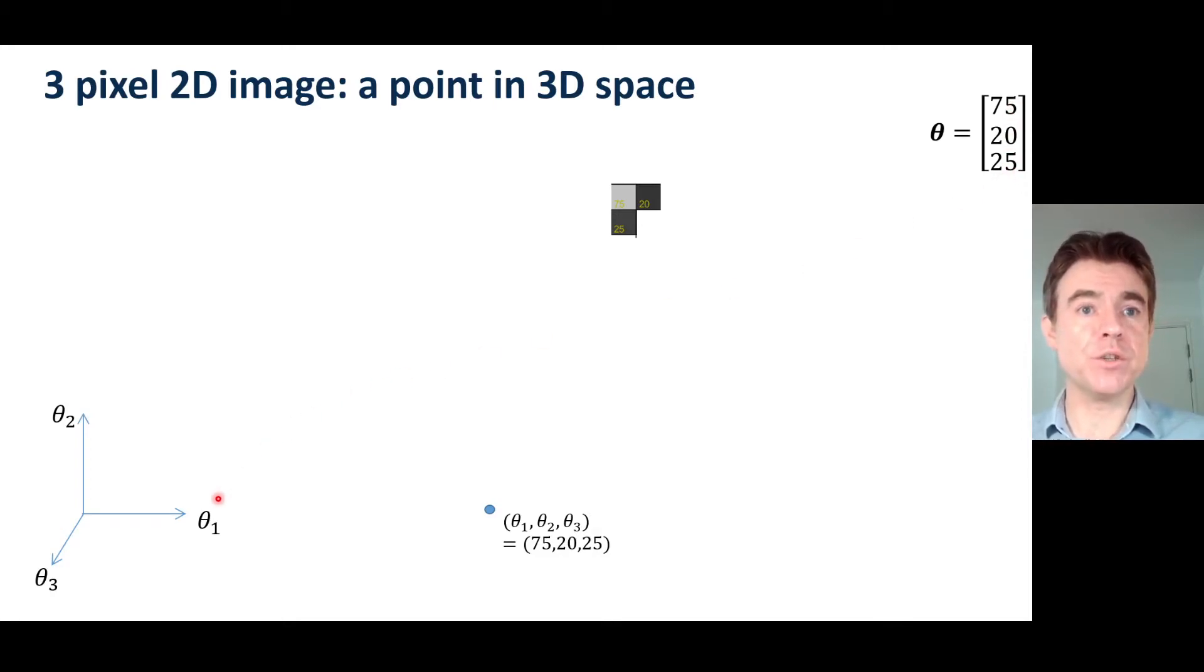And so now I could consider a 3D space with theta 1, theta 2 and theta 3 as the axes. And I just traverse a distance of 75 along axis 1, in other words the dimension theta 1, a distance of 20 along theta 2, a distance of 25 along theta 3, which will take me to a coordinate in 3D space.